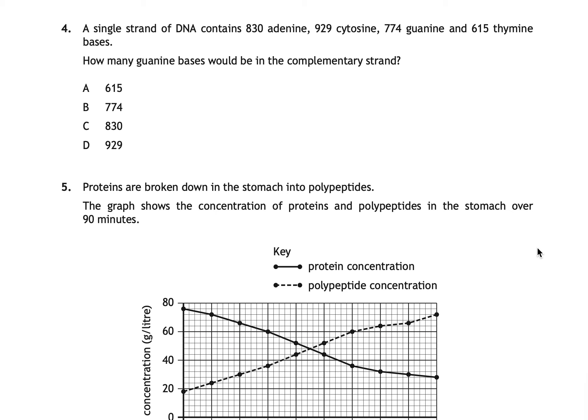Question four is a DNA question. A single strand of DNA contains 830 adenine, 929 cytosine, 774 guanine, and 615 thymine bases. How many guanine bases would be in the complementary strand? The correct answer is D: 929. Cytosine is complementary to guanine, so the complementary strand will have the same number of guanine bases as the number of cytosine bases on the original strand — 929.